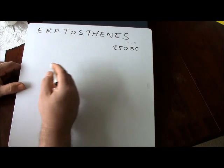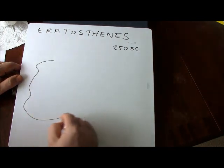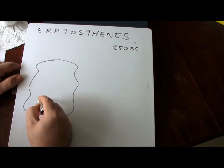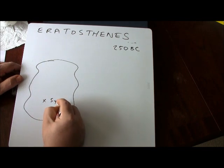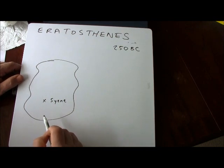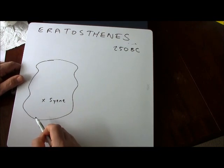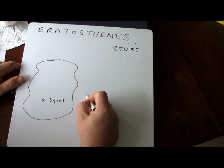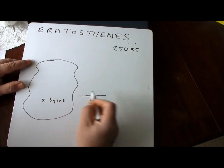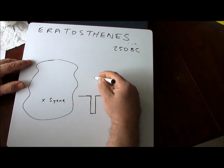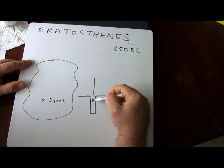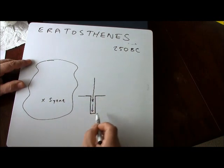If we imagine the ancient world, there was a place called Syene. Something very interesting happened at Syene on the summer solstice: at midday, there was a very deep well, and at midday on the summer solstice the Sun was directly overhead — at the zenith — so light from the Sun would go all the way down to the bottom of this well.